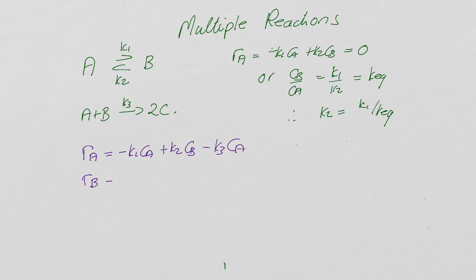Similarly, let's see if we can write rate B. Rate B then is equal to, we're forming B in the first reaction, so it's K1 Ca, we're using it up in the reverse reaction, and then we're also using it up in this second reaction, and I've made a mistake here, sorry, if it's elementary, it's K3 Ca Cb, and similarly, that would be K3 Ca Cb.